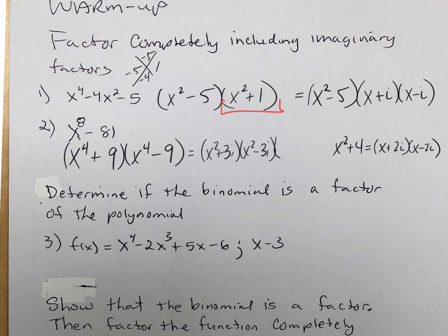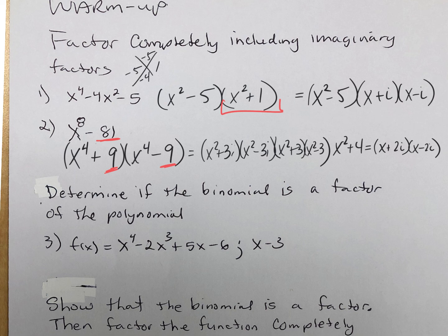So x to the fourth plus nine factors as (x squared plus 3i)(x squared minus 3i), and x to the fourth minus nine is (x squared plus 3)(x squared minus 3). That square breaks down further, so you have to factor it completely.